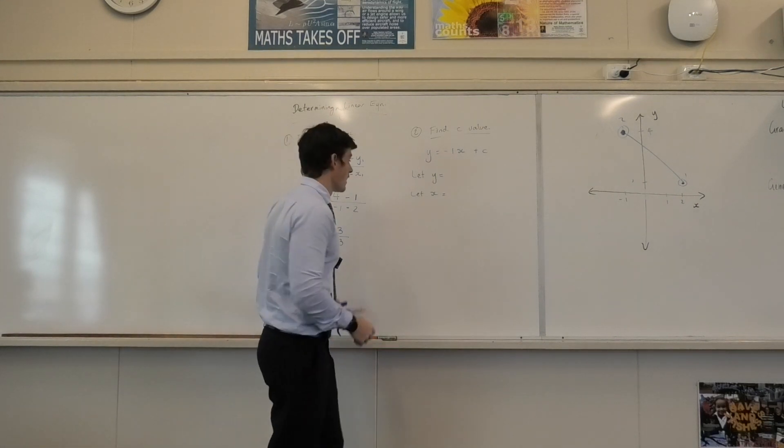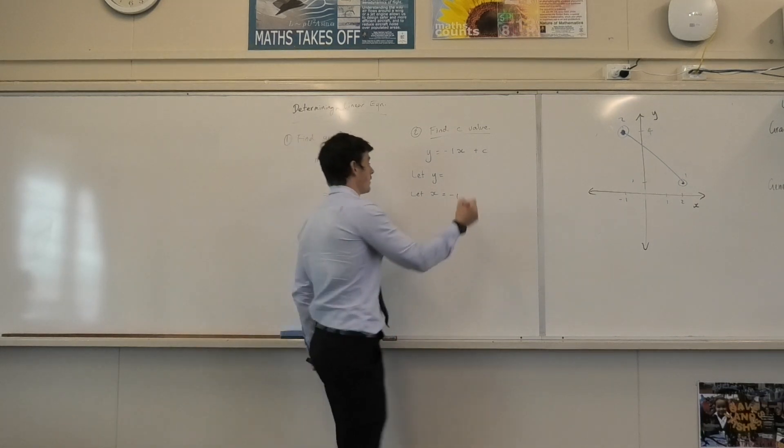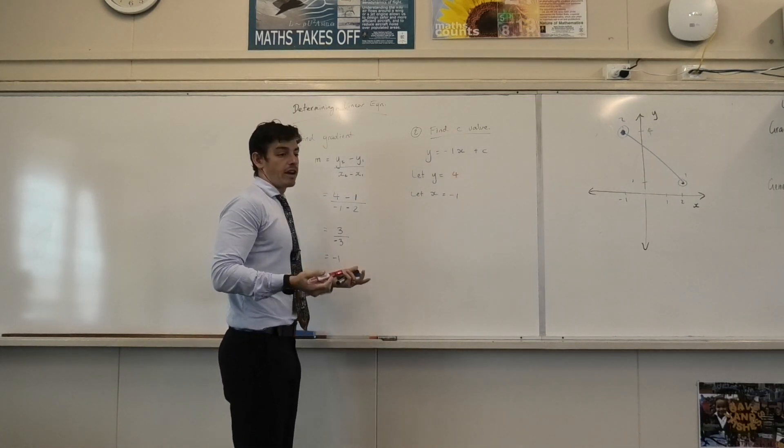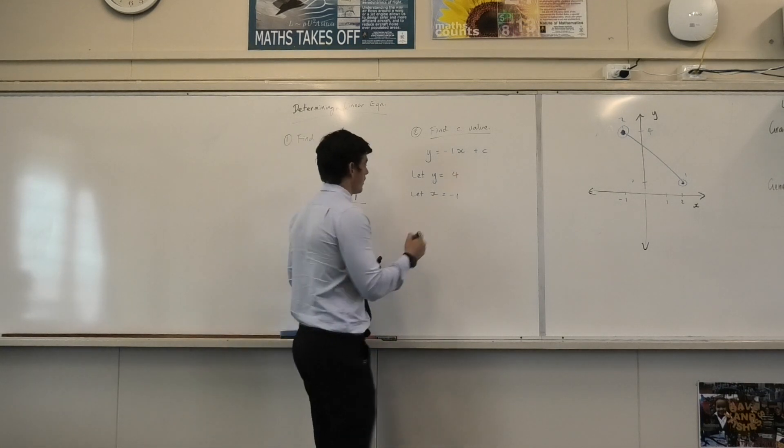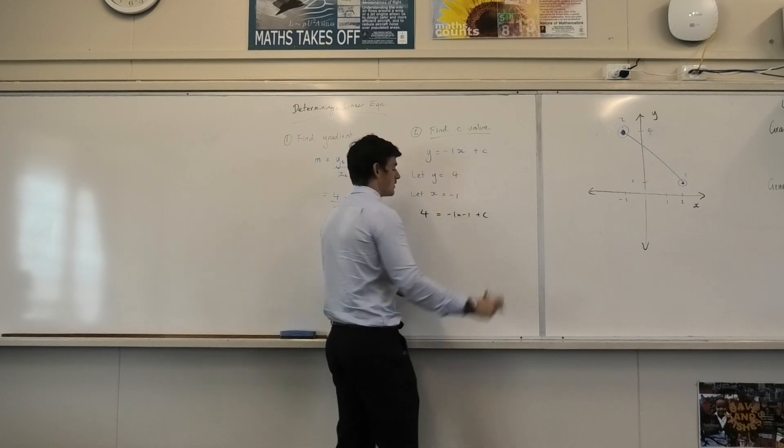Zero. Why don't I pick a point that I know on the graph? What point do I know? I know that when x equals, let's say negative 1, what does y equal? 4. Correct? Am I okay in saying that or not? Yeah.